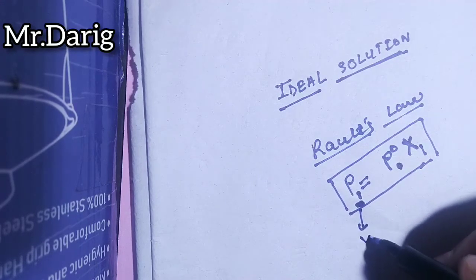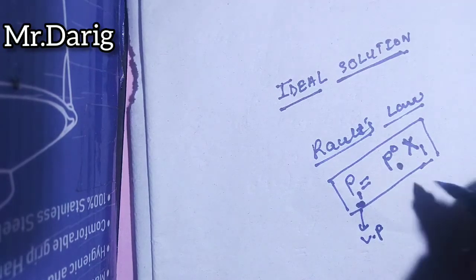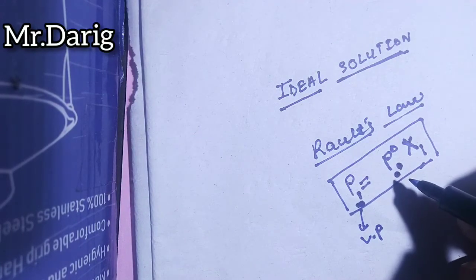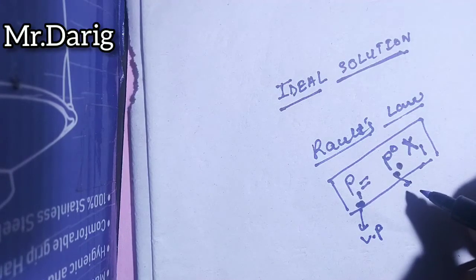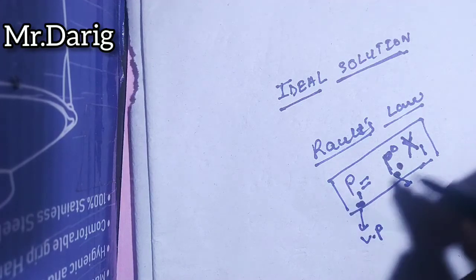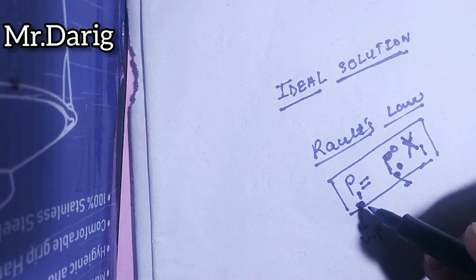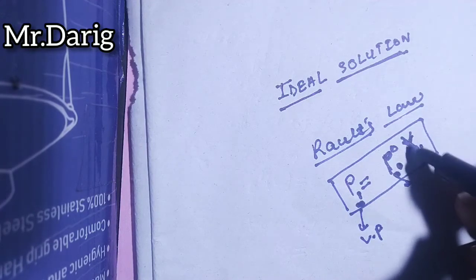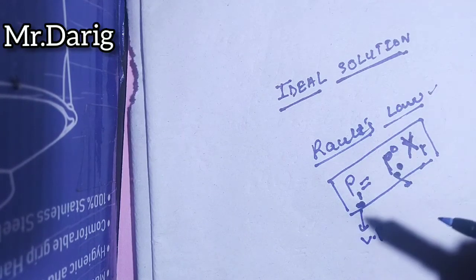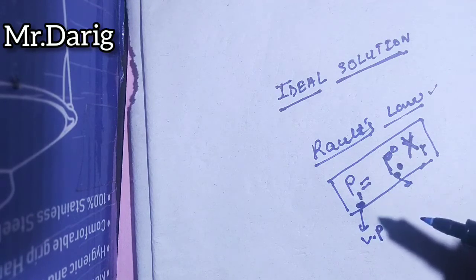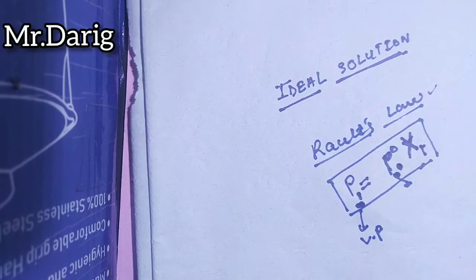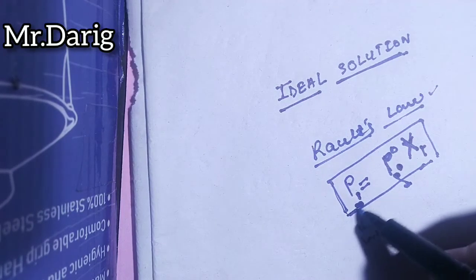P1 equals P01 into x1. So, P1 is the vapor pressure of the solvent in solution. Vapor pressure is P0, which is the pure state vapor pressure, and x1 is the mole fraction of the solvent. Raoult's law is very clear.